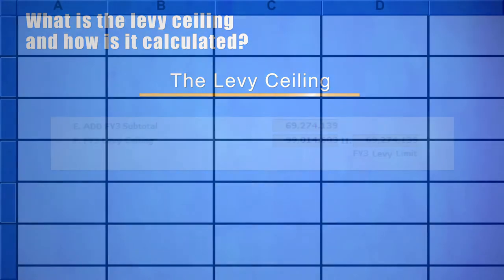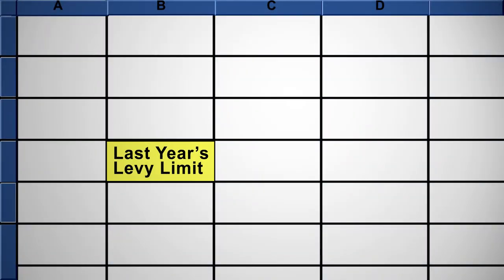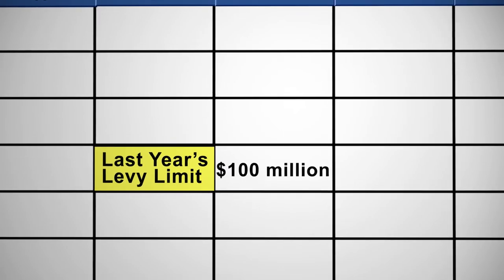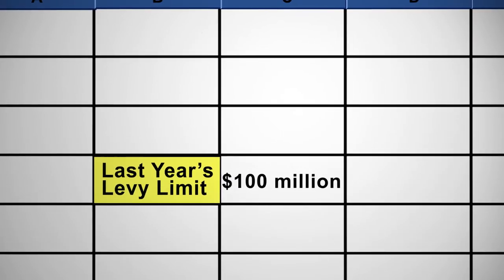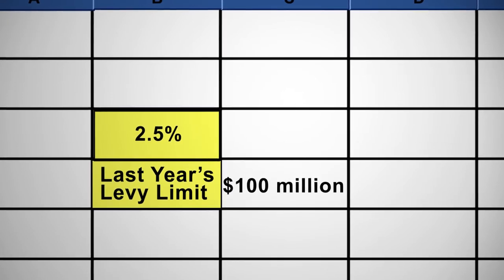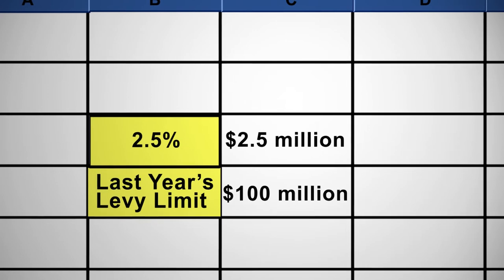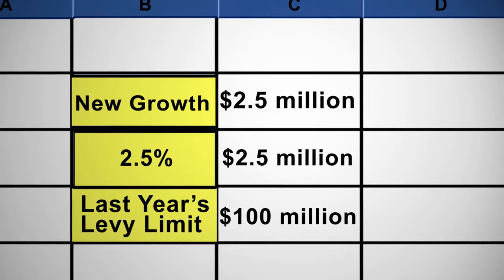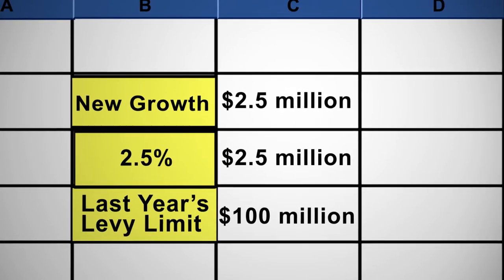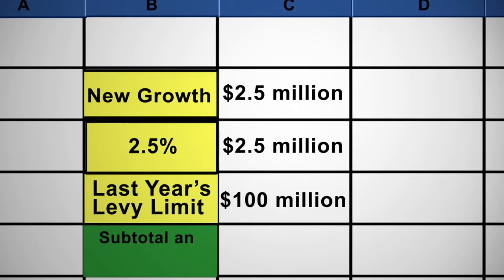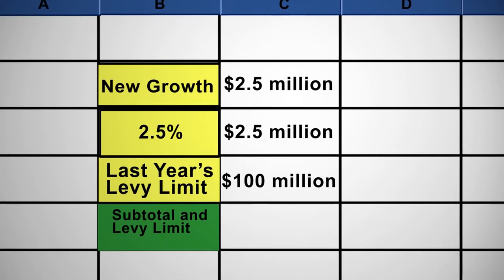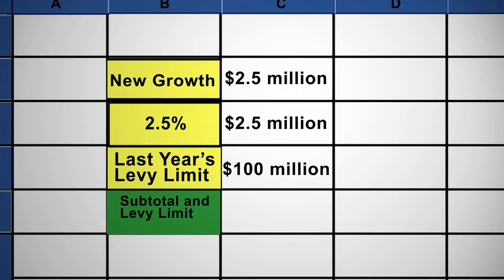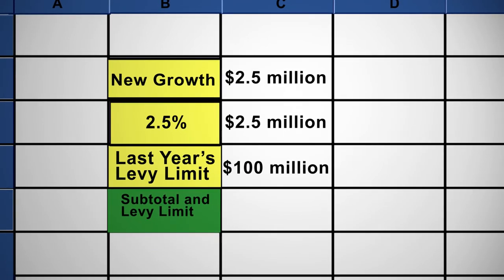To illustrate, go back to our example of the basic levy limit calculation. Last year's levy limit was $100 million. That $100 million base is first increased by two and a half percent — in this case, that would be $2.5 million. Next, we add the dollar amount allowed as new growth. For illustration purposes, our new growth factor is $2.5 million. Adding our $100 million prior year levy limit base, plus $2.5 million automatic two and a half percent increase, plus $2.5 million new growth factor, we arrive at a subtotal of $105 million.